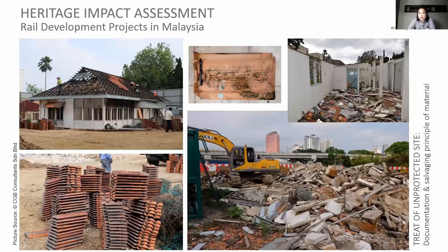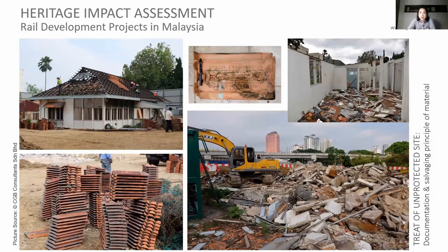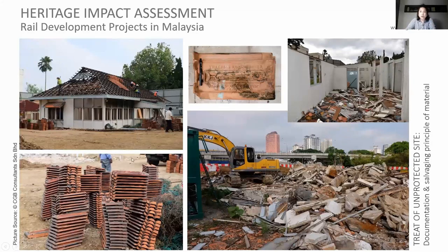For those sites that are unprotected, they are under threat and may be demolished. This is not a high-speed rail project example, but another project where we could not save the building — it was early housing for doctors when the Kuala Lumpur Hospital first set up. In our report we also discuss the principle of conservation: for example, if you must demolish a building, the roof tiles can be salvaged and reused. In Malaysia, old Marseille roof tiles today sell for about five ringgit — approximately $1.50 US per piece.